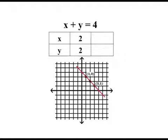2, 2 is another ordered pair which satisfies the given equation x plus y equal to 4. And what we can see that the point lies on the line previously drawn with other ordered pairs.